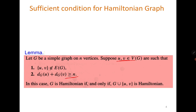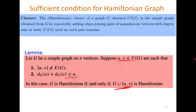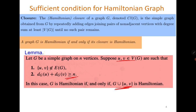Then G is Hamiltonian if and only if G union the edge uv. It means you make these two non-adjacent vertices adjacent, and after making them adjacent, if the new graph is Hamiltonian then the original graph is Hamiltonian. If we do it recursively, then we can define the closure of the graph, which means we keep updating the graph until there is no pair of non-adjacent vertices whose degree sum is greater than or equal to n. Then the result says that graph G is Hamiltonian if and only if its closure is Hamiltonian.